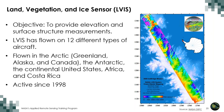The next sensor we'll discuss today is LVIS, which stands for Land, Vegetation, and Ice Sensor, and is a LIDAR sensor. Its objective is to provide elevation and surface structure measurements. LVIS has flown on 12 different types of aircraft and has flown in the Arctic — including Greenland, Alaska, and Canada — the Antarctic, and the continental United States, as well as Africa and Costa Rica. It has been active since 1998. Shown here is elevation data collected by LVIS over the Ukraine glacier in the Antarctic Peninsula, with blue colors representing lower elevation and red colors representing higher elevation.